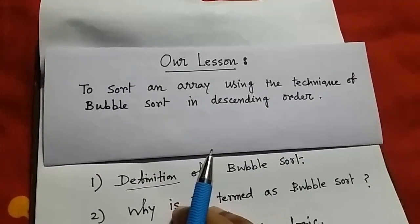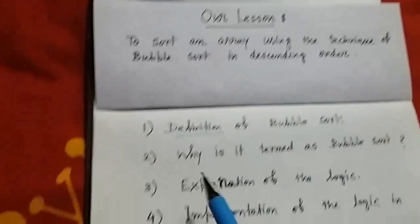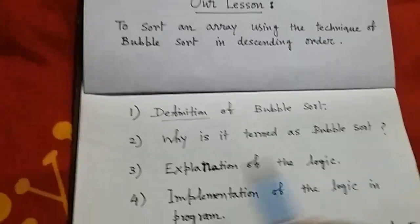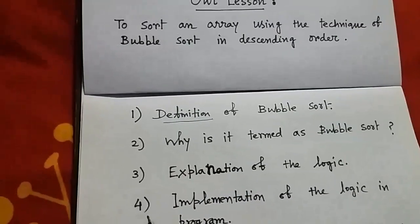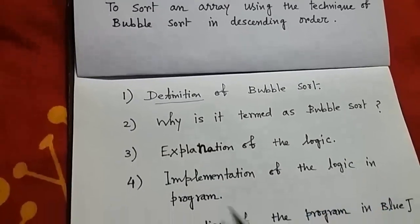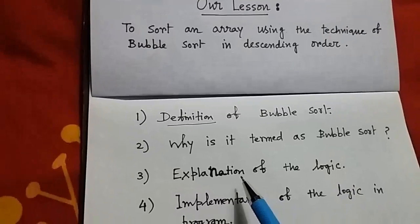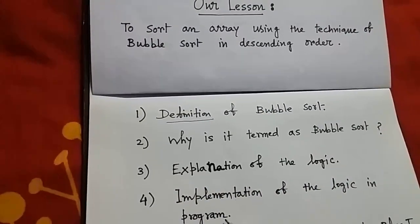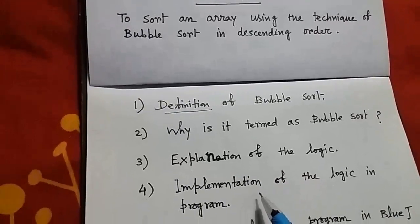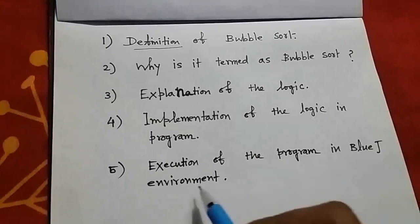This lesson is divided into five parts. First will be the definition of bubble sort. Next, you will be told why it is termed as bubble sort. Next, I will explain the logic, and point number four is the implementation of the logic in program. It is very important to understand the relation between the logic and its implementation in program. And the fifth one is the execution of the program in BlueJ environment.